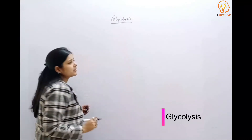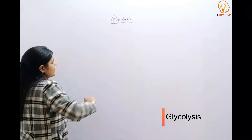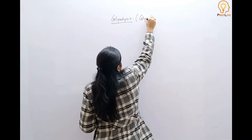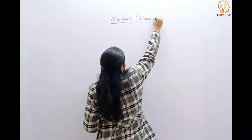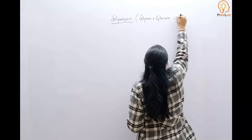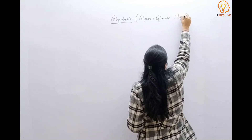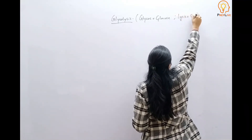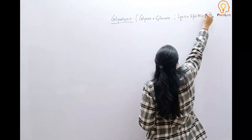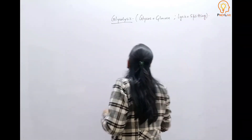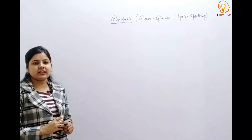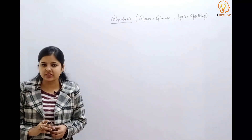The topic is Glycolysis, which basically means: 'Glyco' means glucose and 'lysis' means splitting. This is a process that occurs in the cytoplasm of all cells.